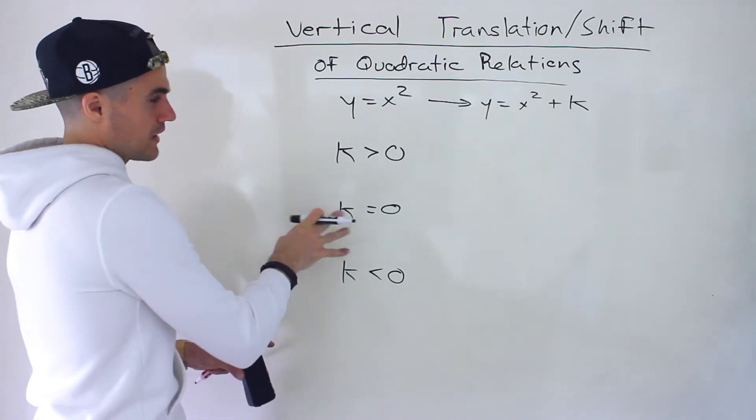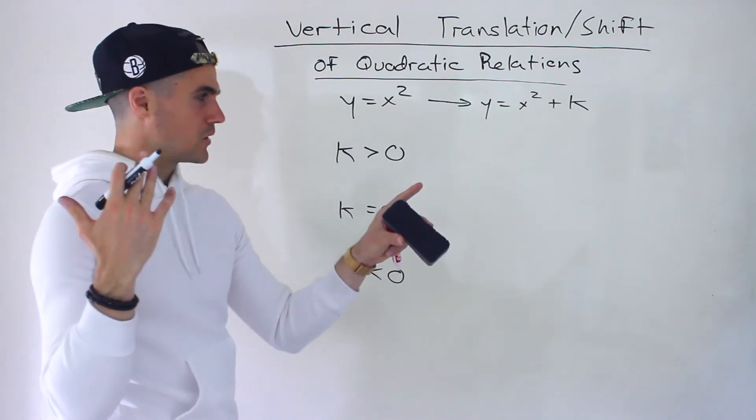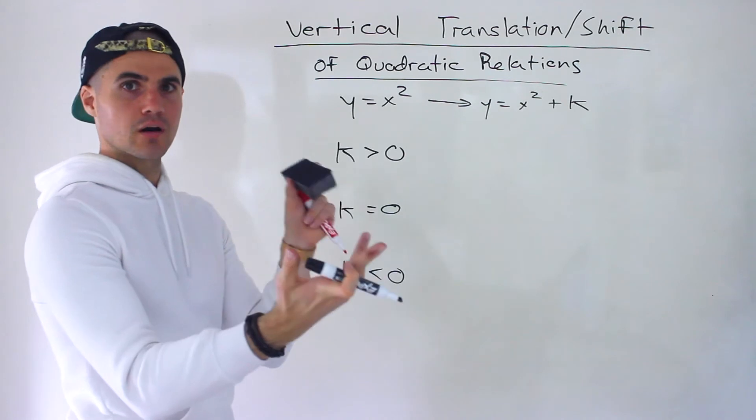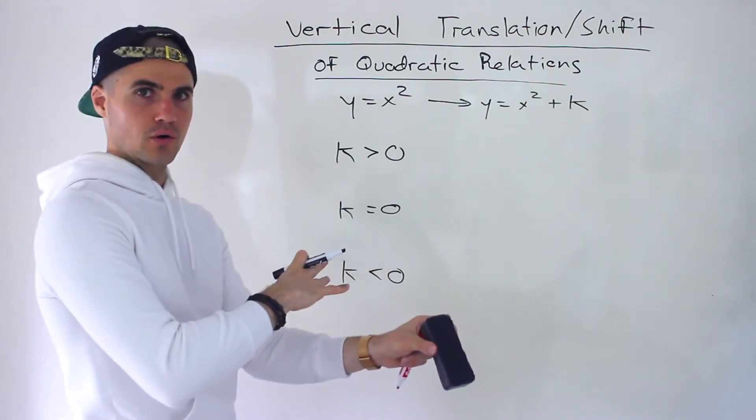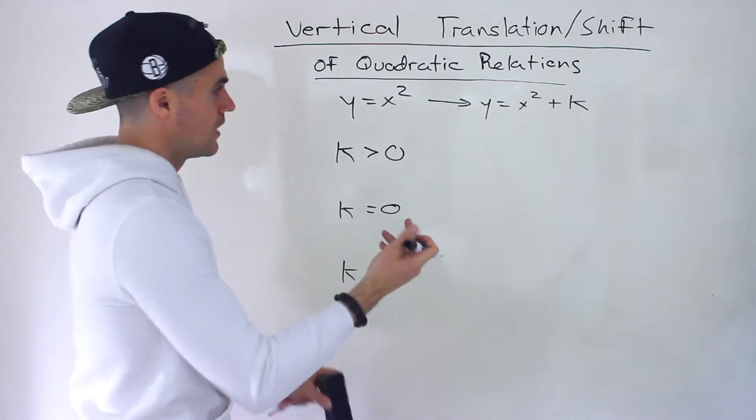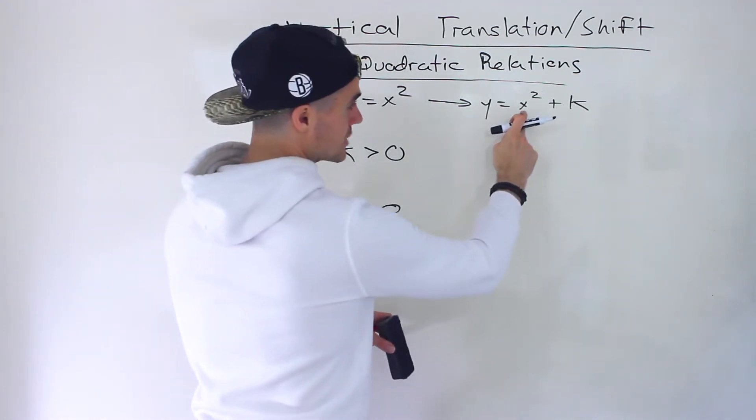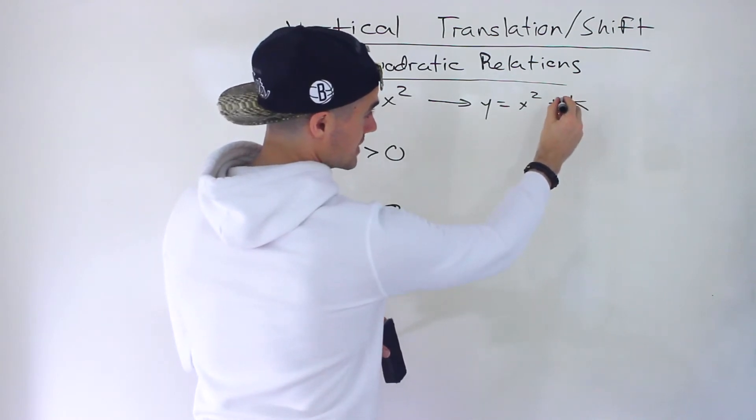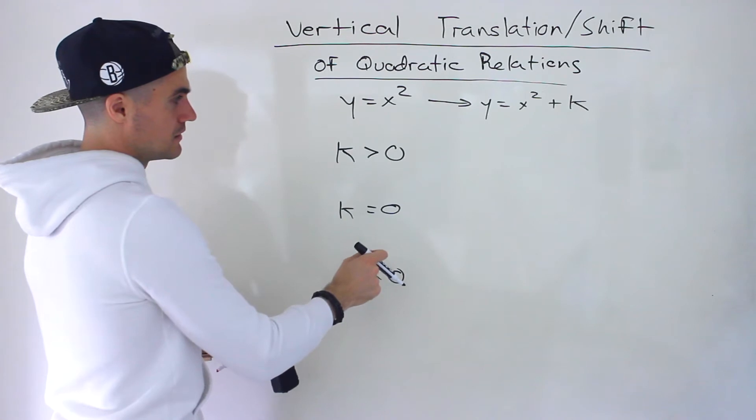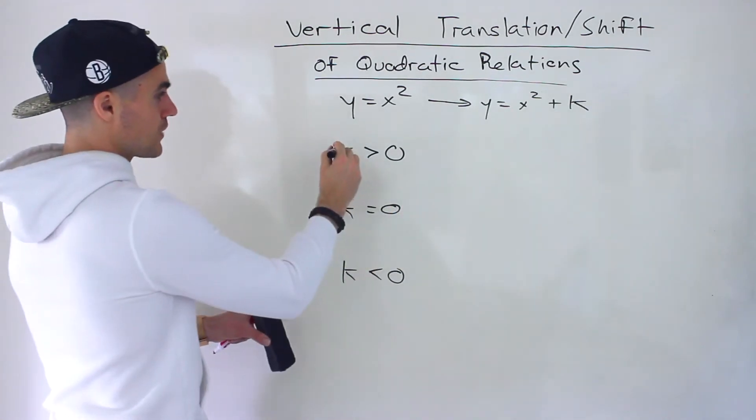Same thing with the h value, but the k value is easier because with the h value, we had to worry about changing the sign. If we had (x + 4)², then h = -4. Or if h = 4, then it's (x - 4)². Here we don't have to worry about that because it's x² + k. So that sign stays the same and it's intuitive.